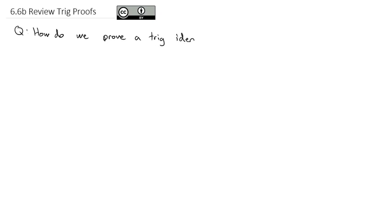The question we're going to answer today is: how do we prove a trig identity? And we're going to do that by working through a few examples. Nothing really new here, just bringing together several concepts in one big video. As we prove these trig identities, the key is that we must always work on one side.